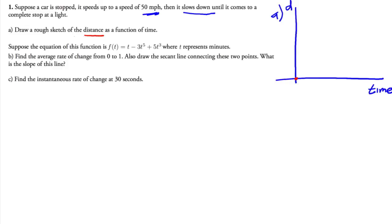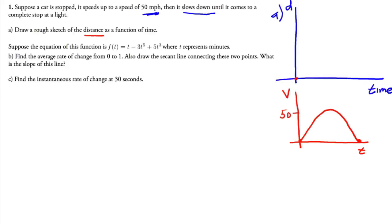Notice we're going to sketch the distance as a function of time, so you have to be careful because the information given is speed. For example, if I were to sketch time and velocity, I would say it starts at a velocity of zero, goes up to 50 miles an hour, and then comes back down when it stopped. But for the distance graph, even when you're slowing down, you're still advancing, so the distance is still going up.